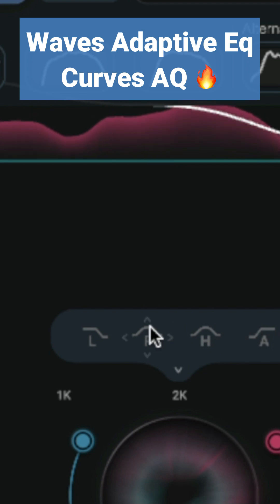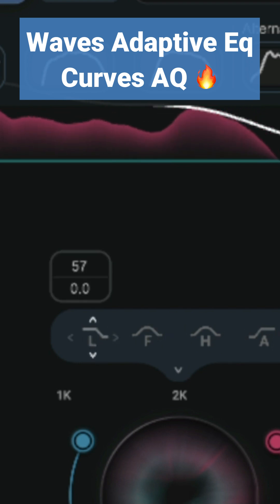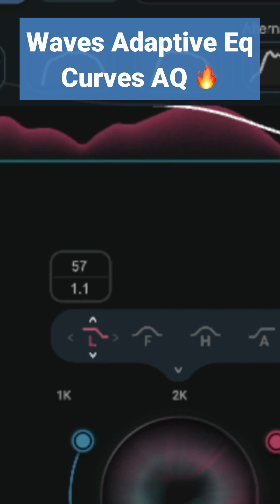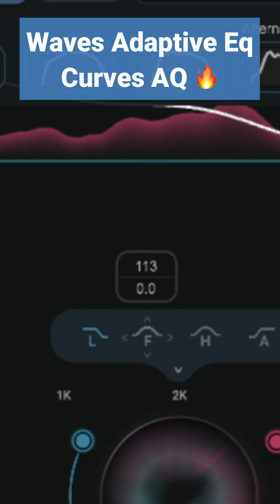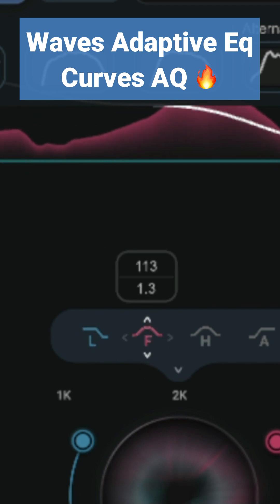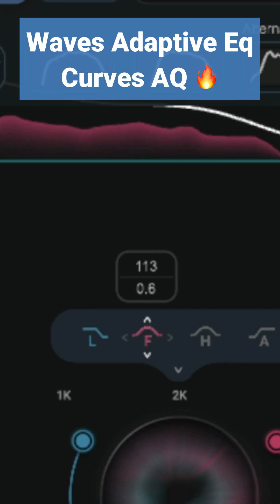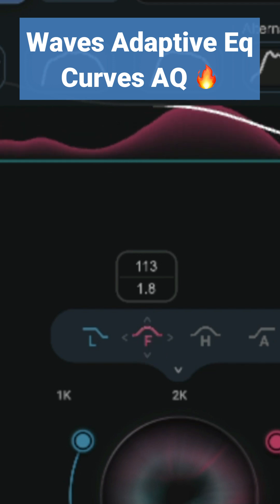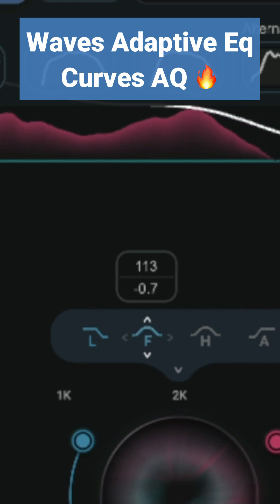These four things here are called anchors. These anchors can be looked at as quick go-to EQ areas to cut or boost. When you first load the plug-in and click learn, the plug-in will automatically set these anchors to specific frequencies. These are movable as well — click and drag to boost or cut the target curve.